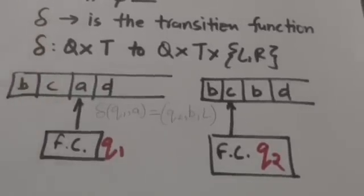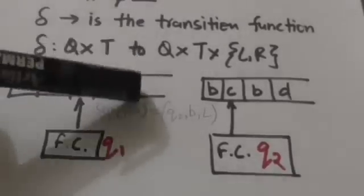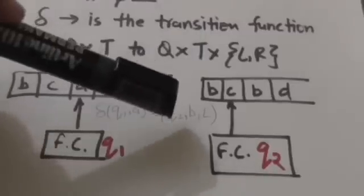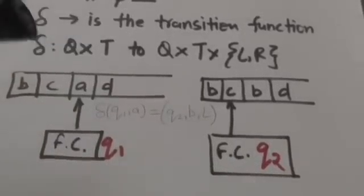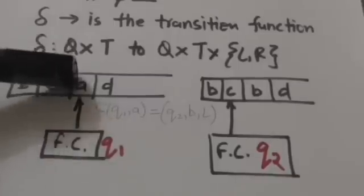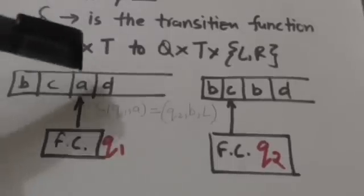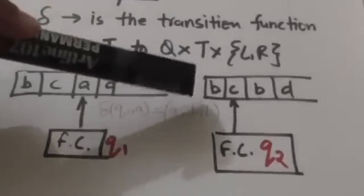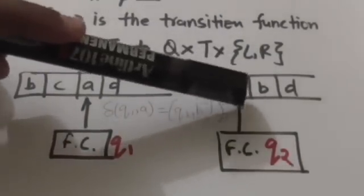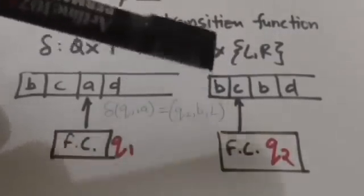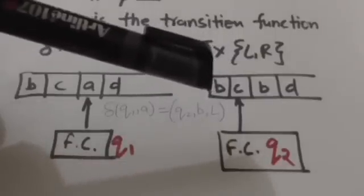It would be more clear after this example. Suppose the output of the transition function for state Q1 and tape symbol A is Q2, B, L. What does it mean? It means if the Turing machine is in state Q1 and it reads tape symbol A, then it will jump to state Q2, replace tape symbol A with tape symbol B, and move the head one position left. The symbol L represents that the tape head will move one position left.